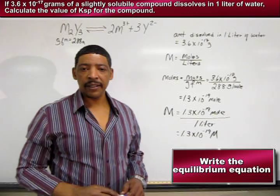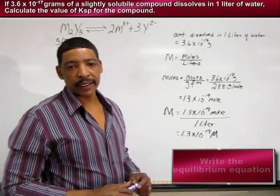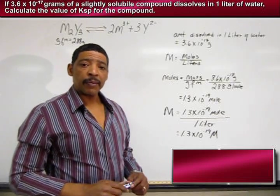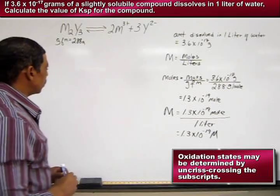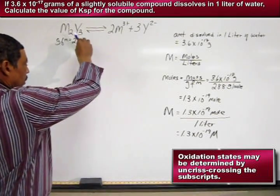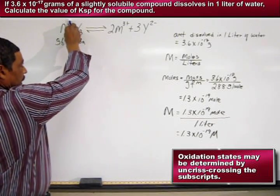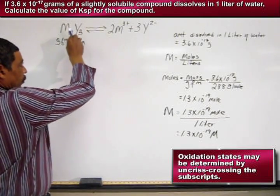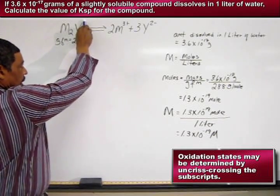To determine the oxidation states of the ions, you must remember when writing formulas for ionic compounds in general, a process known as the crisscross method is usually employed. In other words, when writing this formula, the 3 was generated by crisscrossing the oxidation state of the M. The 2 was generated by crisscrossing the oxidation state of the Y.